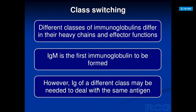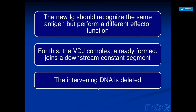In class switching, the different classes of immunoglobulins differ in their habits and effector functions. IgM is the first immunoglobulin to be formed; however, immunoglobulins of different classes may be needed to deal with the same antigen. Depending upon what type of antigen has entered the body, there is a need to class switch. The new immunoglobulin should recognize the same antigen but perform a different effector function.